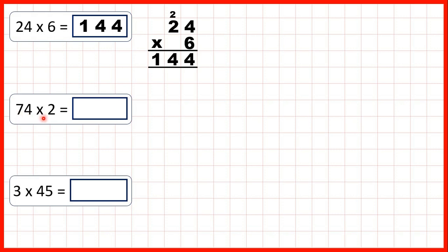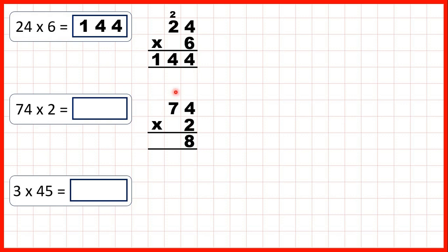Now let's try 74 times 2. We can set the question out in the same way, and we start by multiplying our ones. 4 times 2 is 8, and that's just a single digit number. So we can write 8 in our answer line, and we don't need to write anything above the next place value column along, because 4 times 2 is 8 and that's only a single digit number. So we can move straight on to the tens. 7 times 2 is 14. We don't have anything to add, and we don't have any more digits to multiply. So 7 times 2 is 14, and we can just write that in our answer line to give us an answer of 148.